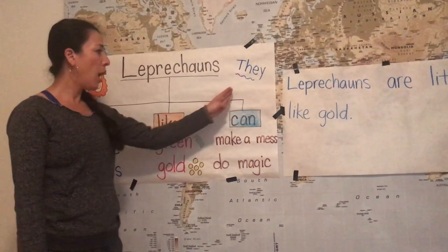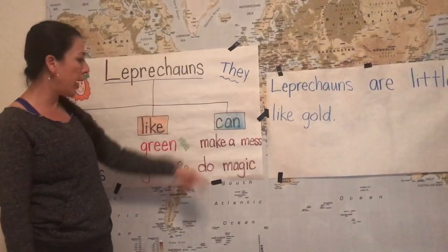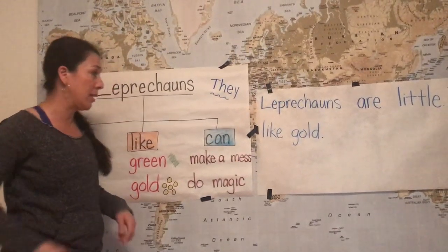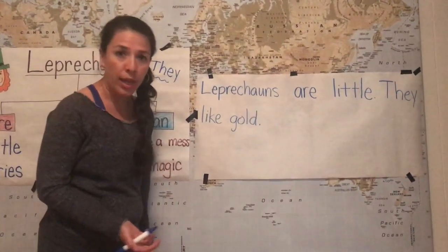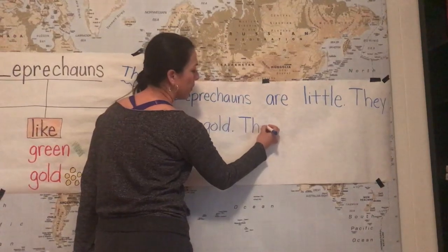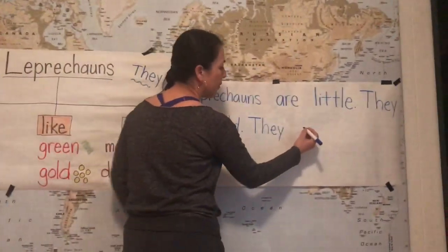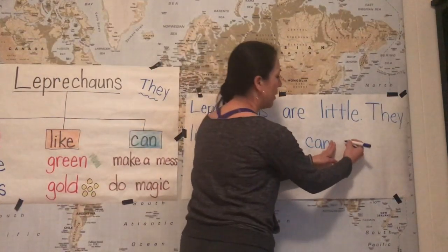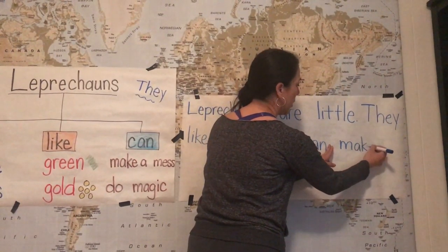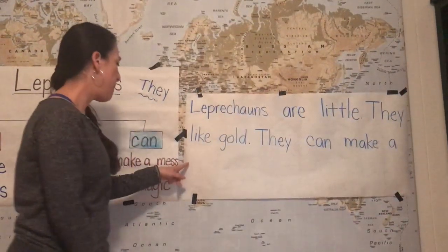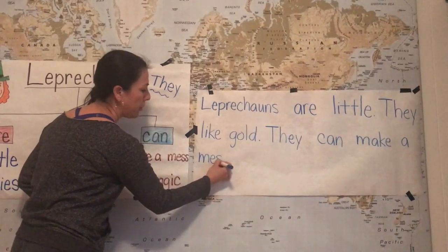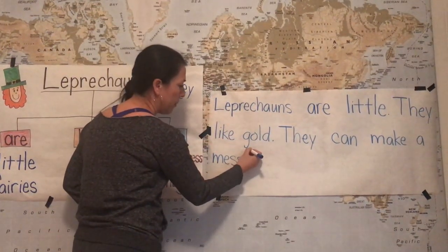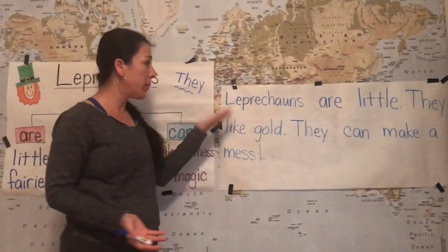That was my choice. Now I'm going to write the third sentence. They can make a mess or do magic. I'm going to go with 'make a mess' because they love to make messes. My next sentence starts with a capital letter: 'they' — my pronoun — can — fingerspace — make a mess! And I think I'm going to shout that, so if I'm going to shout that I need an exclamation mark.